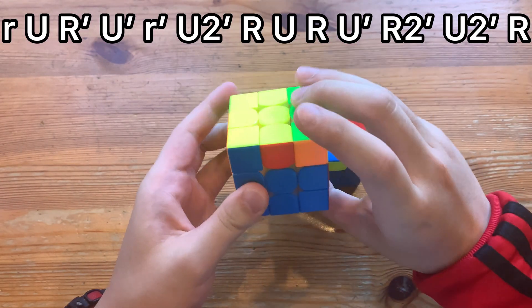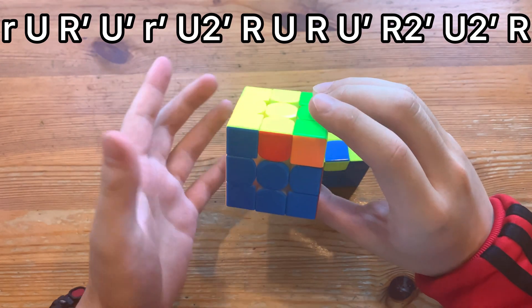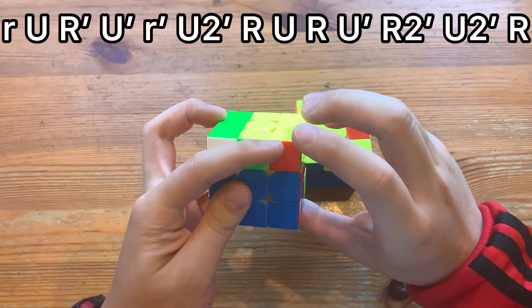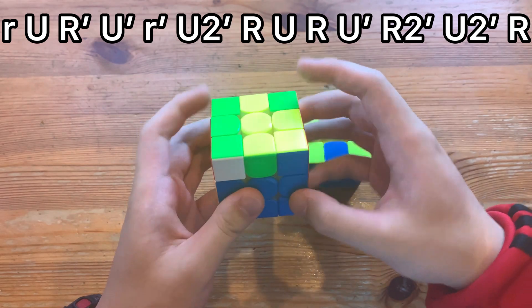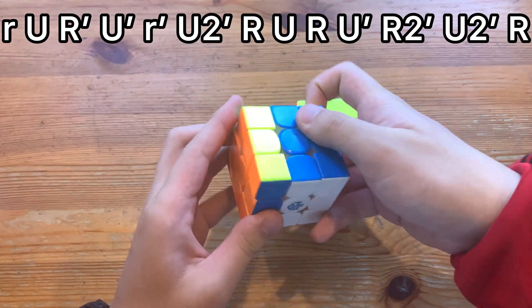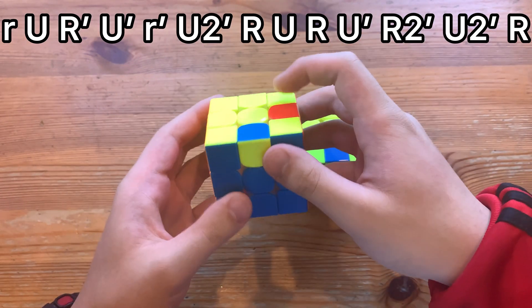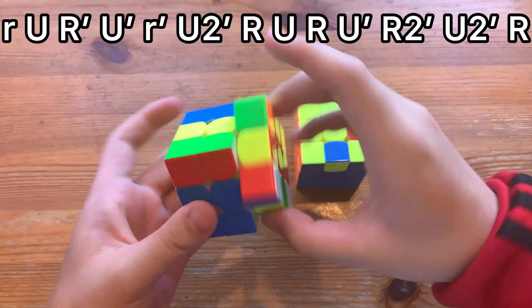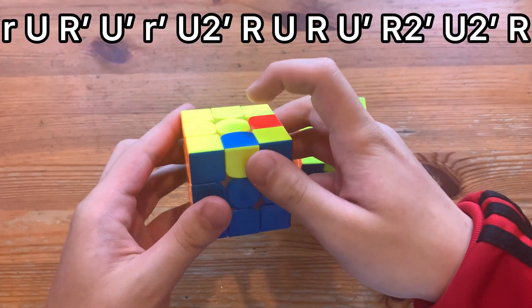The normal alg you would do something like this. So basically the start of the standard alg, but here you do U2 prime R, and then insert this pair, then cancel into reinserting that one. And it's decently fast.